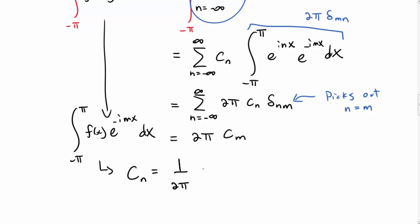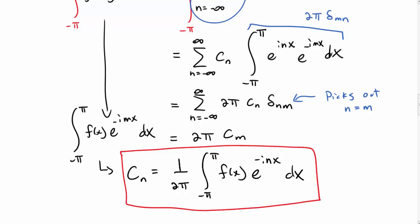So now we have a way to compute the c_n. Take 1/(2π), and then take the integral of f(x) e^(-inx) dx. So if somebody gives you a function f(x), this is how you would compute those coefficients, c_n.